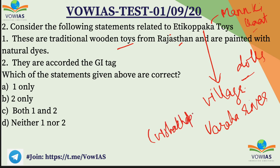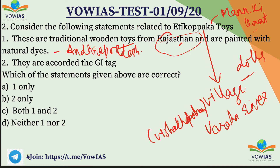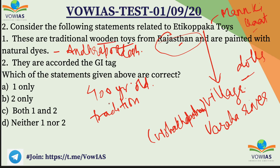Now Etikoppaka is a village situated on the banks of the Varaha river, and it comes under Visakhapatnam. So these toys are made in Andhra Pradesh, not Rajasthan. This is a 400-year-old tradition of wooden dolls painted with natural dyes. These are recorded with the GI tag, so the answer is B — second statement only. The first statement is wrong.